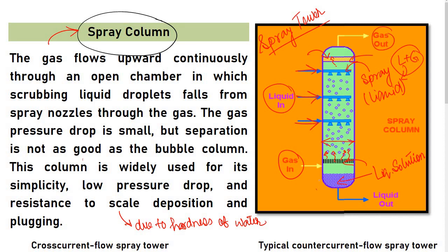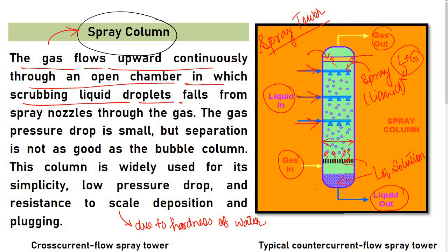If you want to use the liquid out, the gas flows upward continuously through an open chamber in which scrubbing liquid droplets fall from the spray nozzle through the gas. You can see the spray nozzle. The gas pressure drop is small but separation is not as good as the bubble column.